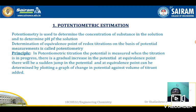In potentiometry, the potential increases slowly, and at the equivalence point there is a sudden jump in the potential. This sudden jump is used to plot the graph, from which we calculate the amount of Fe present in the given solution.